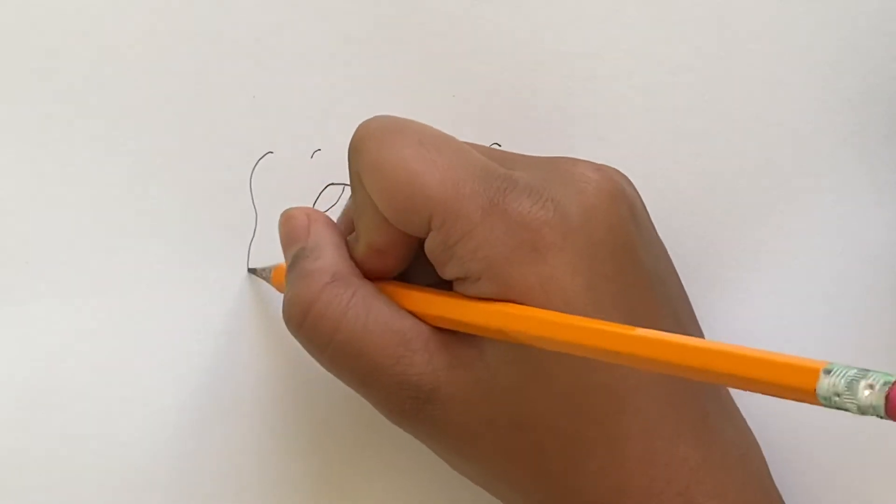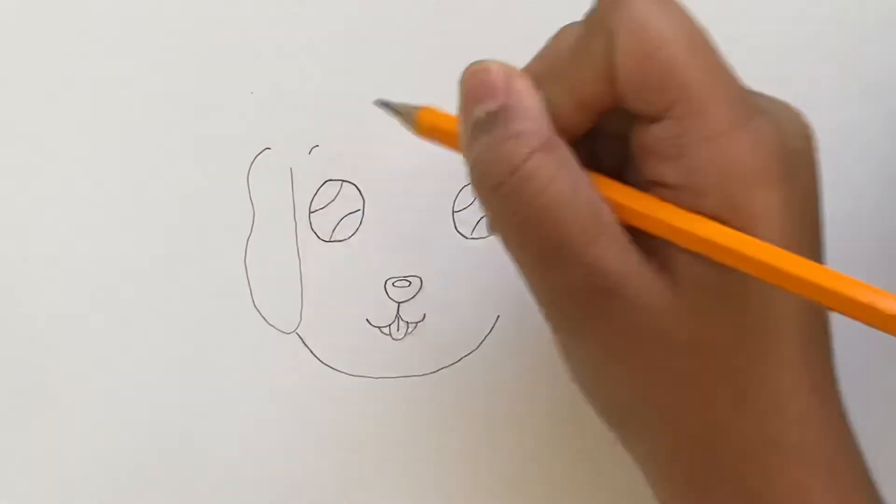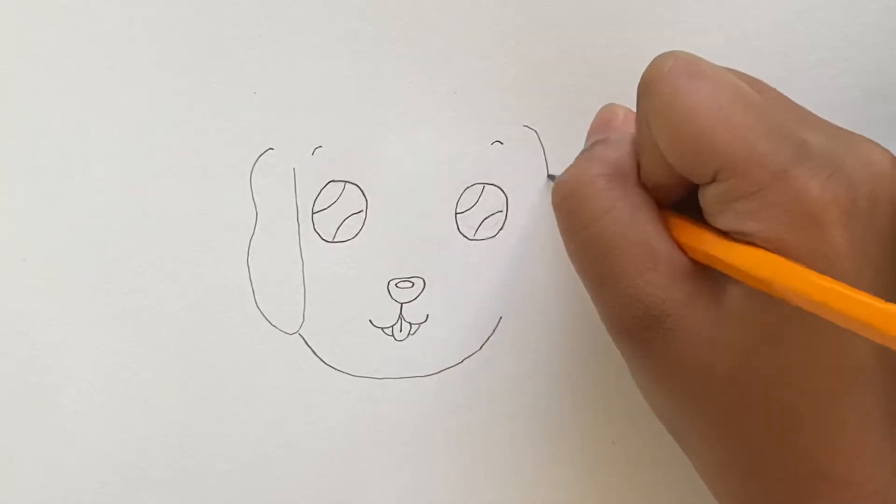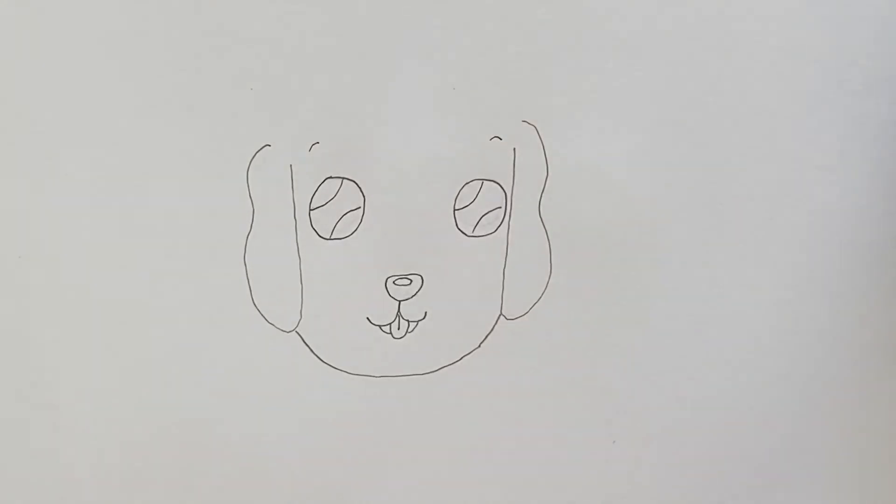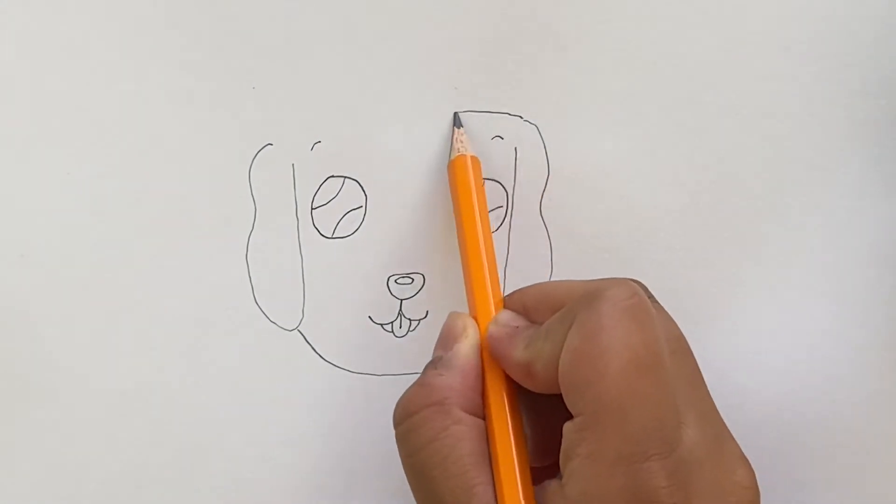Now we're going to move on to the ears, so just kind of draw like a squiggly line. And do the same thing for the other one. Also, this dog is going to have a Christmas hat on, so now we're going to move on to the Christmas hat.